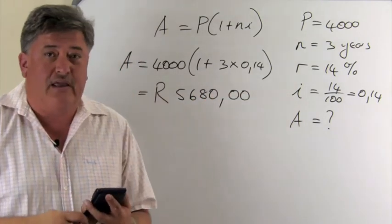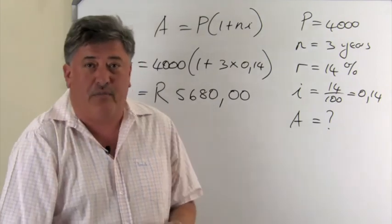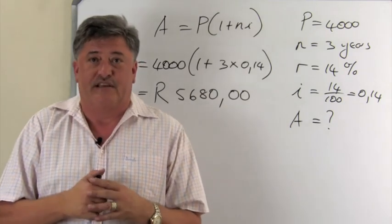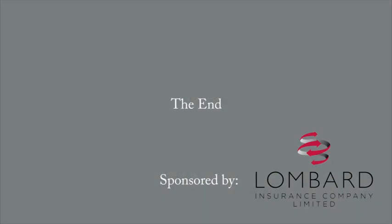So she is going to pay this amount finally for this tumble dryer. So that is the original loan plus the interest. Let's look at the second part of the question. But you can do this.